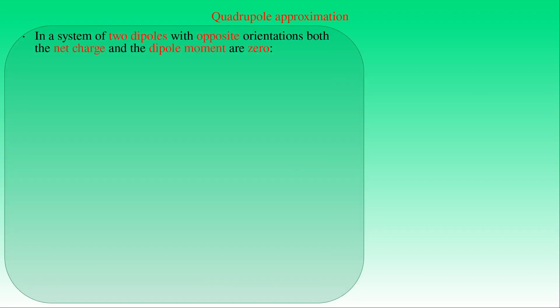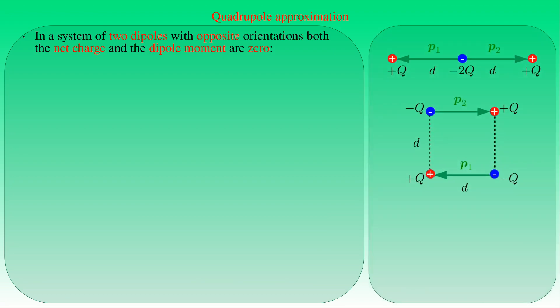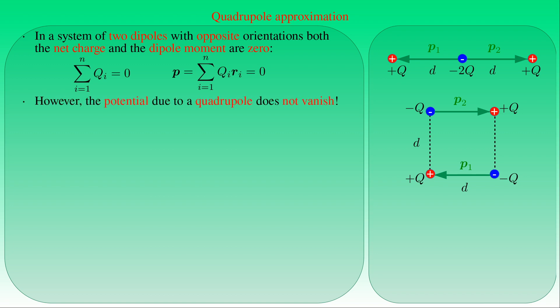Besides dipoles, another important system is the quadrupole, formed by two dipoles with opposite orientations. Two types of quadrupoles are shown: with electric dipole moments lying on the same or parallel lines, where both the total electric charge and the dipole moment of the system are zero. However, the electric potential due to a quadrupole does not vanish, meaning higher-order terms must be included in the Taylor expansion of the potential.